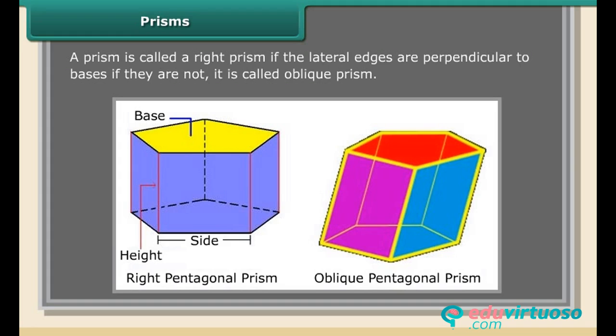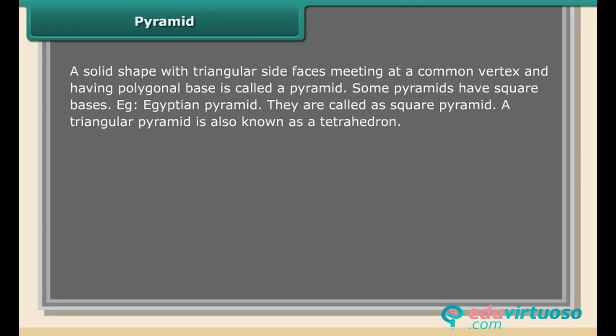Pyramid: A solid shape with triangular side faces meeting at a common vertex and having a polygonal base is called a pyramid. Some pyramids have square bases, for example, the Egyptian pyramid. They are called square pyramids.